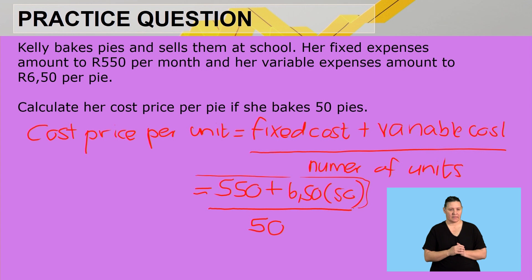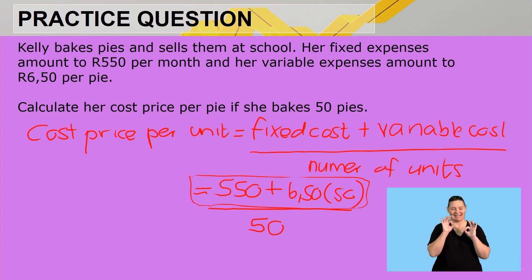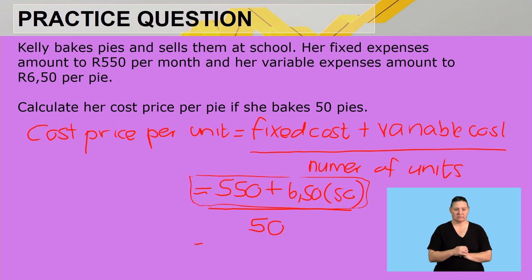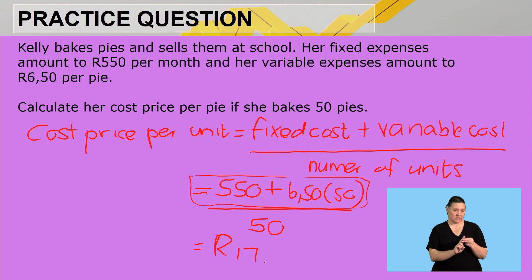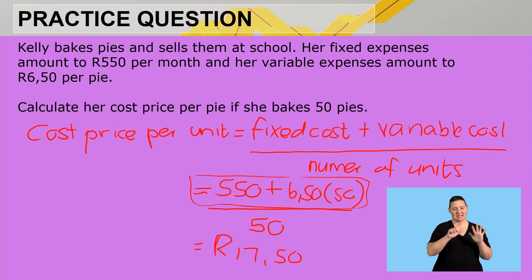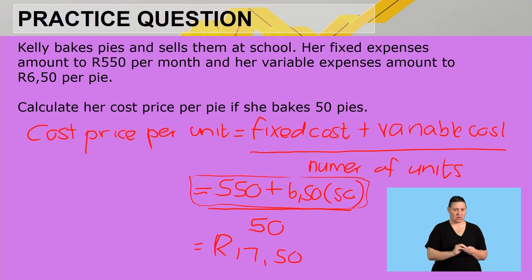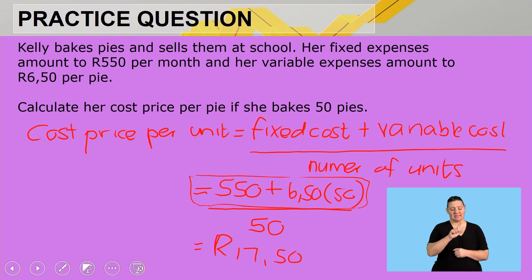Can you see here at the top, it is the exact same formula from the previous question. Her cost price per unit, or per pie, is R17.50. So it will cost her a total of R17.50 in variable and fixed costs combined.